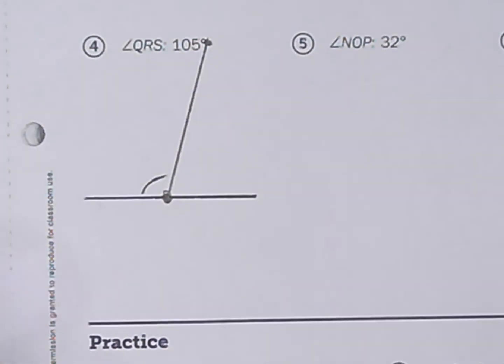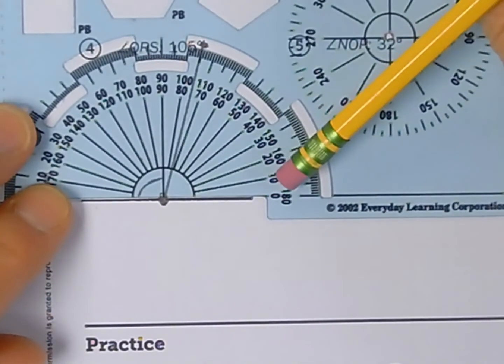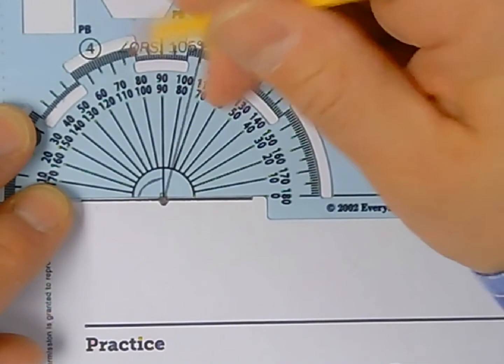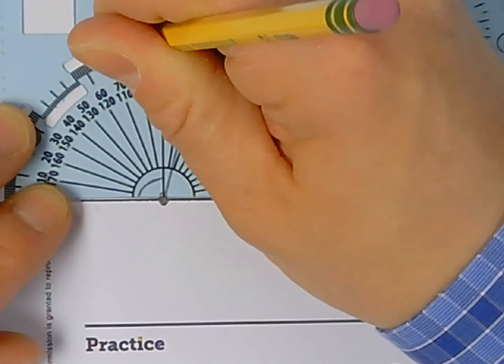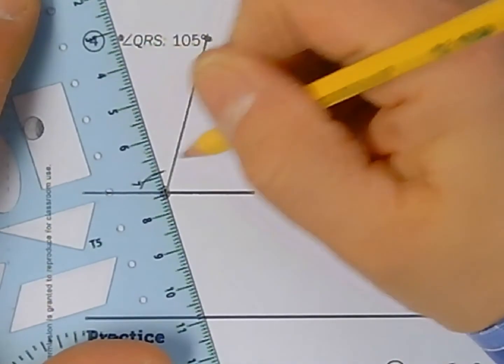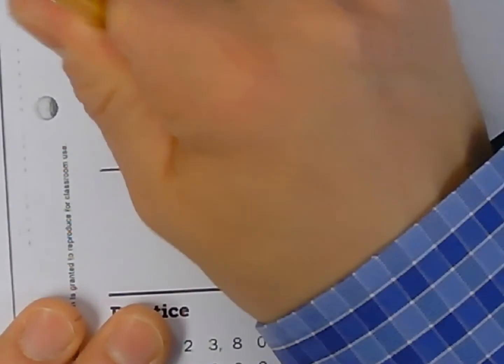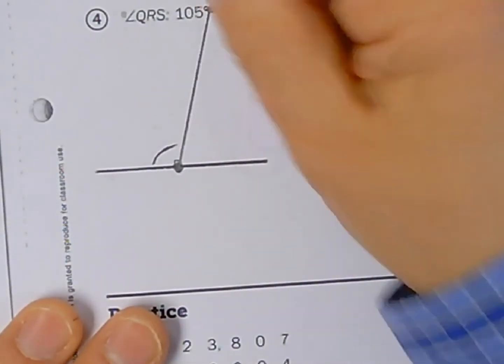Now if I did it the other way around I could have found 105 on this side of the dial on the left hand side and I could have put a dot right there. And I could have drawn a line to connect it this way and made the angle go the opposite direction but this is where I made my angle. So this is my angle 105 that is 105 degrees.